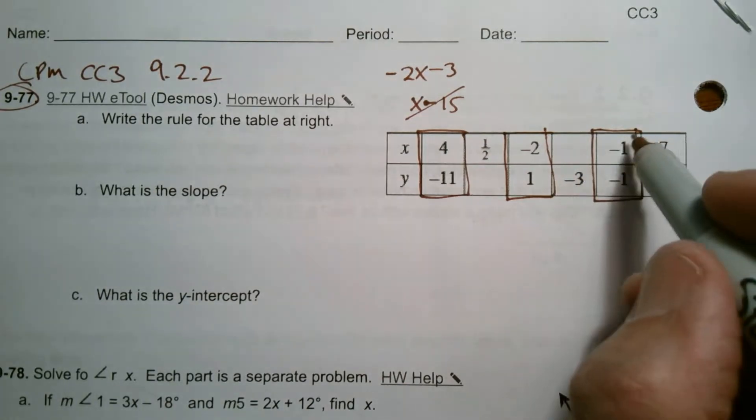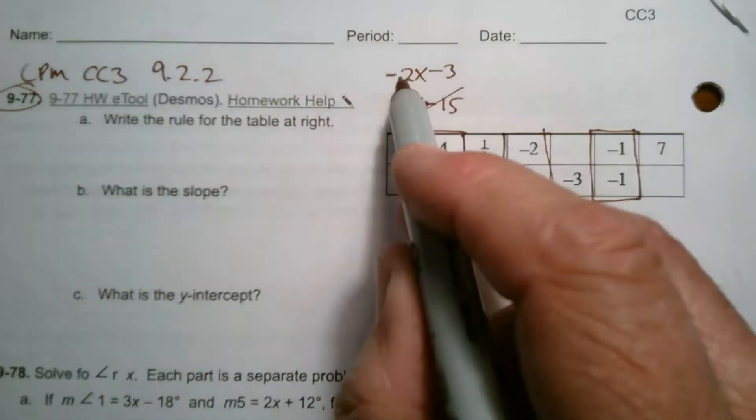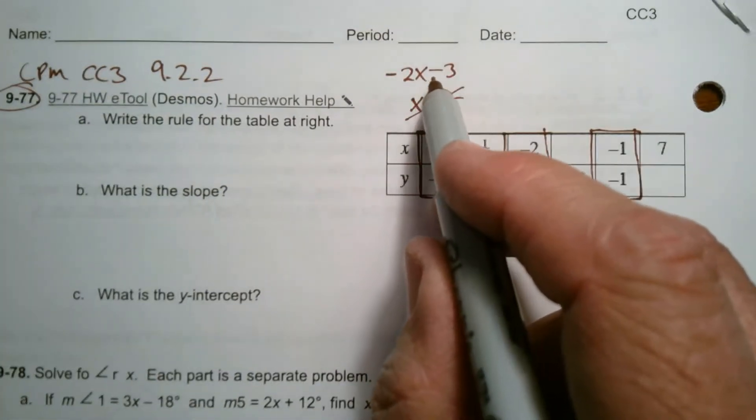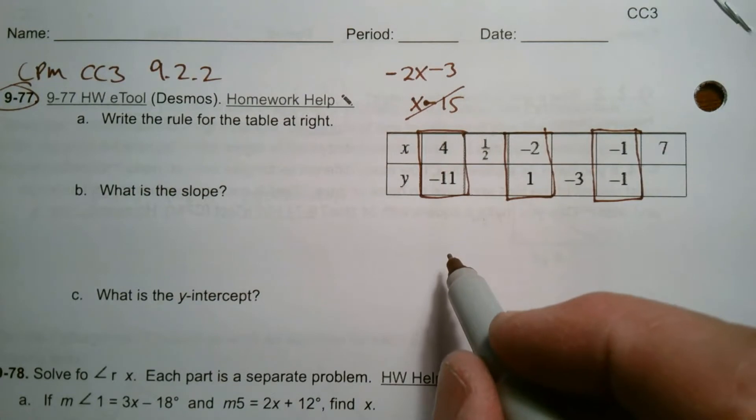Oh, look at that. And then let's check this. Negative 2 times negative 1 is positive 2. And then positive 2 minus 3 is negative 1. I lucked out. That is the rule.